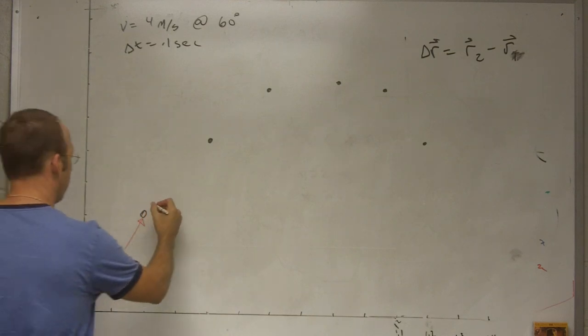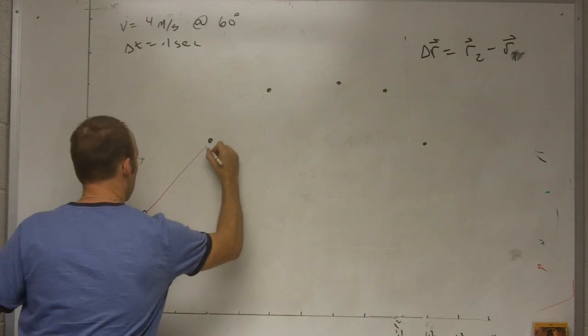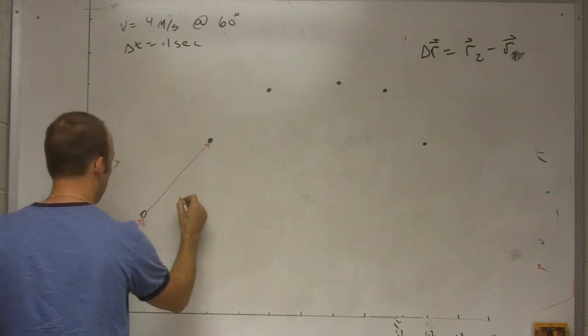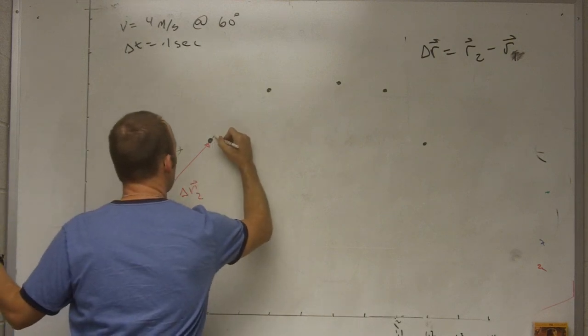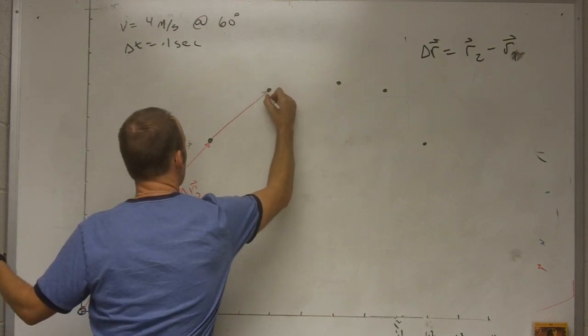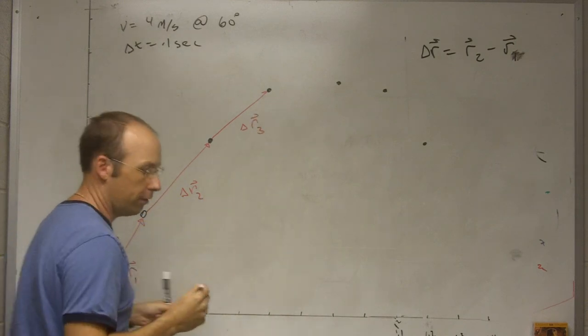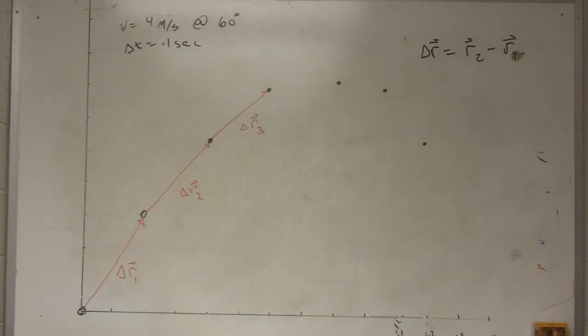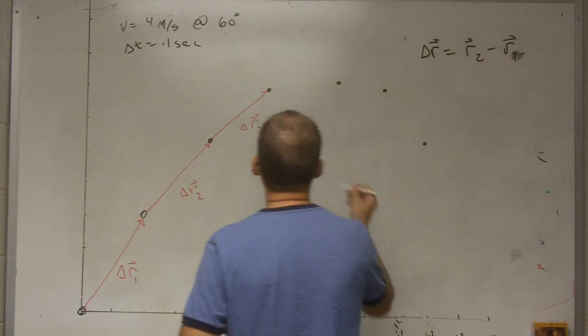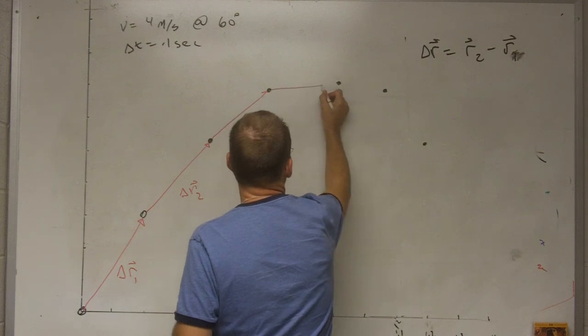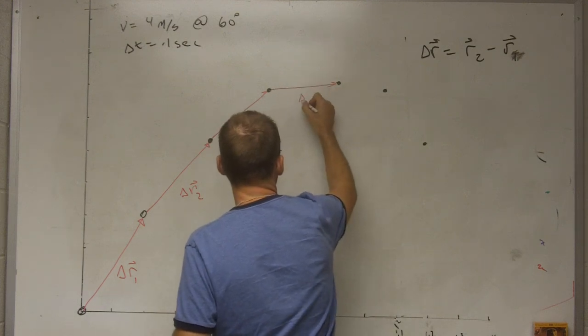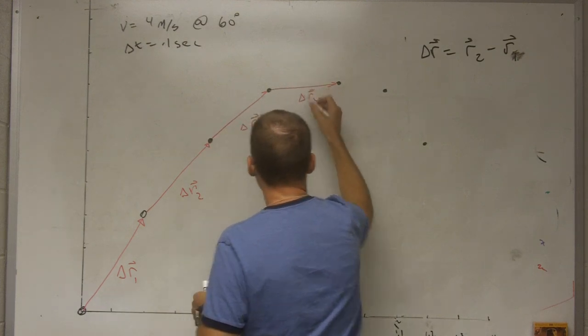Let me do this for the next one too. Delta r2. Delta r3. Can you see the red? It looks like it's showing up okay enough. Let me draw one more. Delta r4.